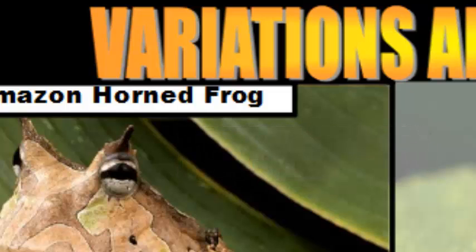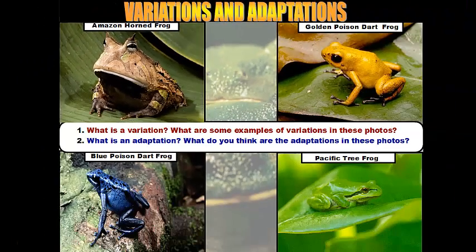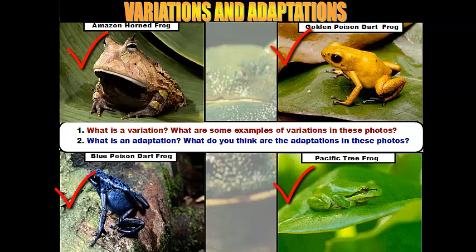Let's take a look at two or three variations amongst these frogs. If we look at body colors, you'll notice that they vary or differ amongst the Amazon horned frog in the upper left, the golden poison dart frog in the upper right, the blue poison dart frog in the bottom left, and the Pacific tree frog in the bottom right.